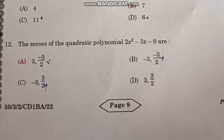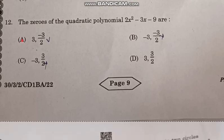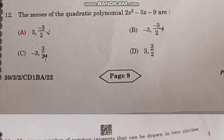Question number 12: The zeroes of the quadratic polynomial 2X squared minus 3X minus 9 are correct answer option A, 3 and negative 3 by 2.